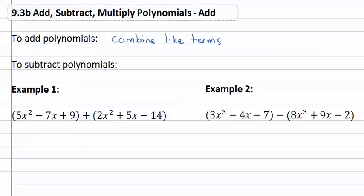Subtracting polynomials is really similar with one extra step. We must first distribute the negative, then we're able to add and subtract the like terms.